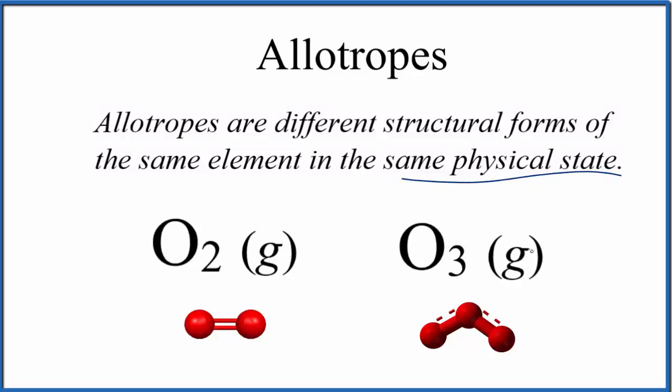Well, first off we have the same physical state—they're both gases, so that fits our definition. Then they're made up of the same element, we have oxygen atoms here and oxygen atoms here. Finally, they have a different structure: two oxygen atoms bonded in a linear molecular geometry, and here we have three oxygens bonded in a bent molecular geometry. So O2 and O3, those are allotropes.